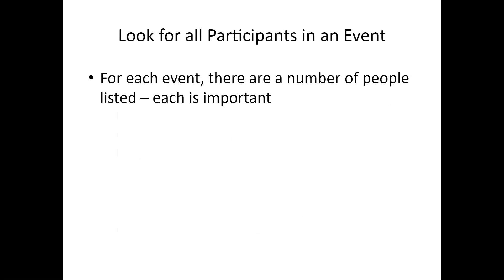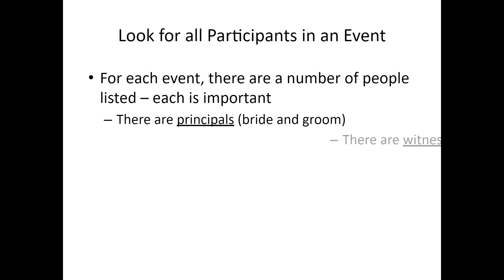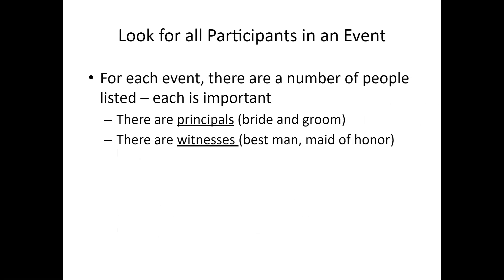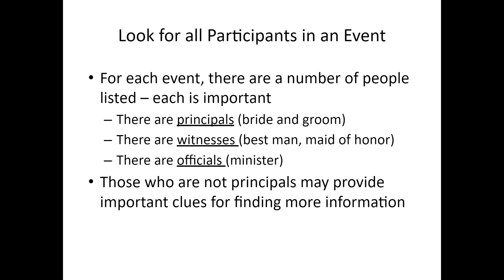When you look at an event, you want to look at everybody. There are a number of people in every event. You have the principals — in a marriage, the bride and groom. You have witnesses. In a marriage license there are often people who act as witnesses, and in the marriage itself you have a best man and maid of honor, and officials like a minister. Even those who are not principals may provide important clues. I was trying to break apart three different McKinney families in Campbell County, Virginia near Lynchburg during the 1700s. I discovered that one group had minister A, one had minister B, and one had minister C — and based on that I separated them into three families, which I later confirmed through other research.